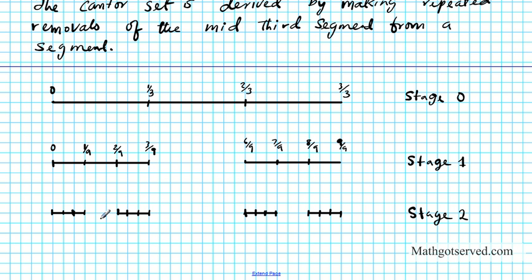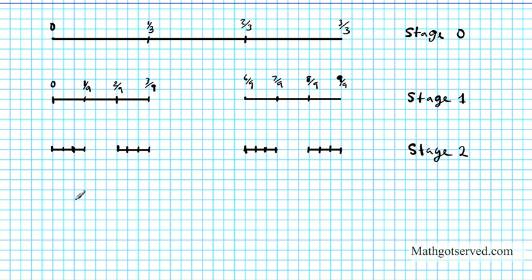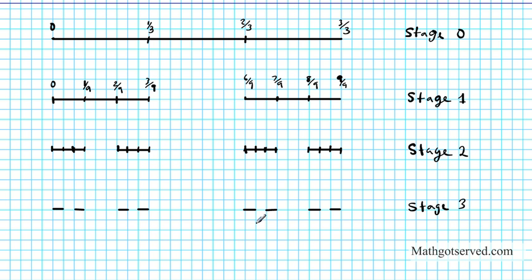So if I take out the middle third again, we're going to have eight segments, each a third of the previous length. This is basically stage 3 of the counter set. So if we continue this process forever, we're going to end up with a set of points that form the counter set — repeatedly taking out the middle third, going on forever. That's how you form the counter set.